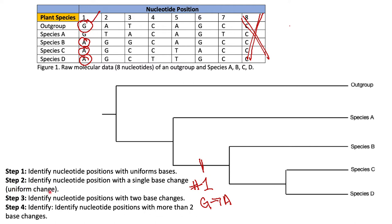Checking for other positions applicable to step two: column two has A, T, G, G, G — three changes — so it does not apply because we're looking for a single uniform change. Column three has T, A, G, C, C — four different bases — so it also does not apply to step two.